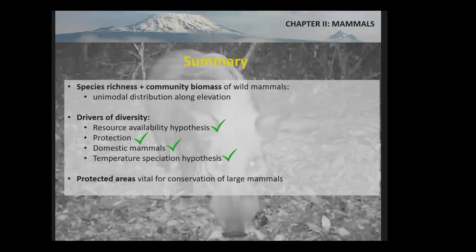To summarize: species richness and community biomass of wild mammals showed a unimodal distribution with elevation, but in protected habitats this pattern shifted. The resource availability hypothesis, protection status, domestic mammals, and the temperature speciation hypothesis all played a role. I could also show that protected areas are vital for the conservation of large mammals. Before moving on to dung beetles, I would like to show you a video of some of the mammals we found.